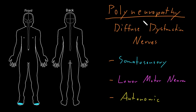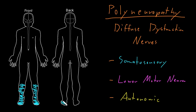As the severity of a polyneuropathy syndrome progresses, those somatosensory abnormalities start crawling their way up the leg, and it's symmetric — both the right and left side are involved about the same amount. It goes all the way around the lower legs on both sides, front and back.